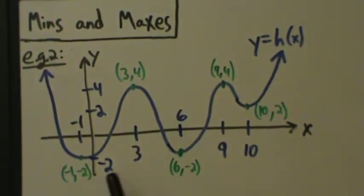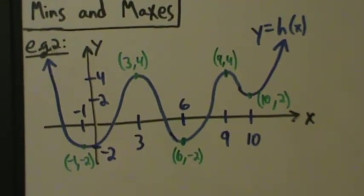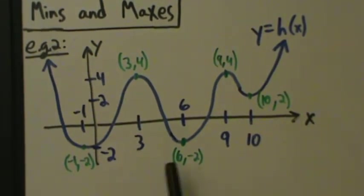But there is only one global minimum value, okay? It's negative 2. But like we mentioned briefly in the last video, you could have that at multiple locations. So the global minimum is negative 2. There's only one global minimum value, but it happens in two places in this example.